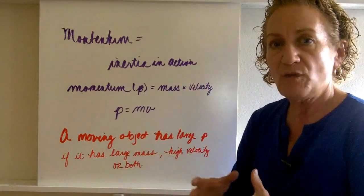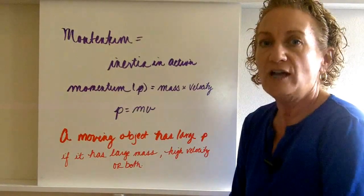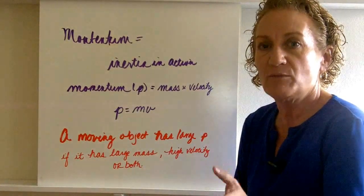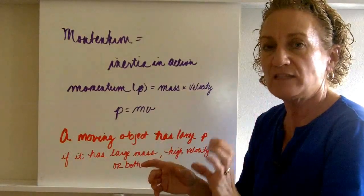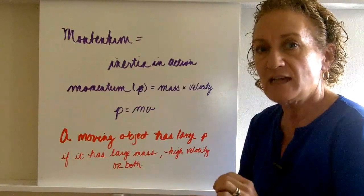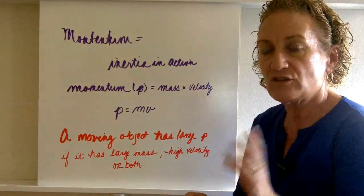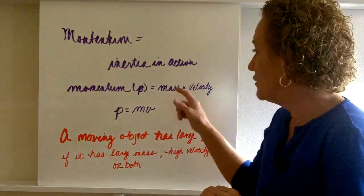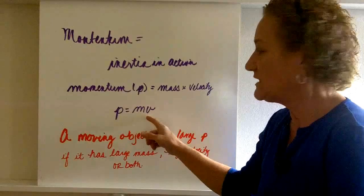Momentum has the symbol of P. I'm not sure why the symbol is P, but that's the abbreviation for momentum, and that's mathematically determined by taking the mass of an object and multiplying it by its velocity. Now, notice I said velocity, not speed, so in the back of your mind, you should start thinking vectors, and we'll get to that later, but momentum is simply mass times velocity.